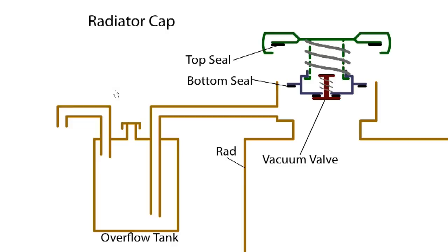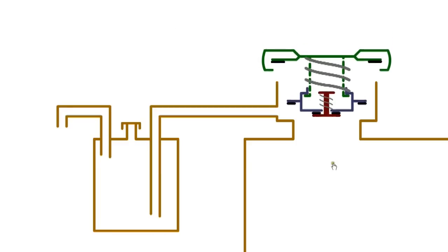The radiator pressure cap pressurizes the system to a specific overpressure, which raises the boiling point of the coolant. It also acts as a pressure relief valve, preventing damage to hoses and connections.